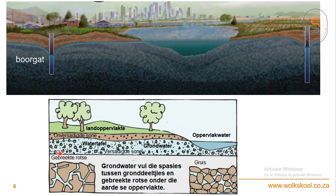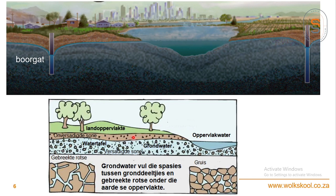Kom ons kyk na hierdie prentjie om vir jou die verskil tussen oppervlakwater en grondwater uit te lig. In die getekende diagram kan ons sien oppervlakwater - dit kan 'n rivier wees, dit kan 'n meer wees, dit kan selfs 'n mensgemaakt dam wees. Ons probleem hier in Suid-Afrika is dat dit baie warm is, temperatuur is redelik hoog, en dan is daar baie van die water wat uiteindelik verdamp. Hier kan ons sien as dit sterk reën, loop baie water in die pad af.